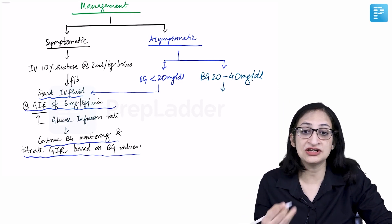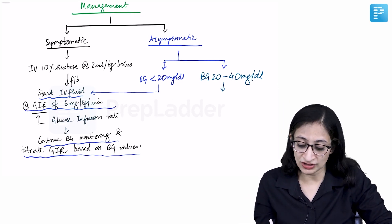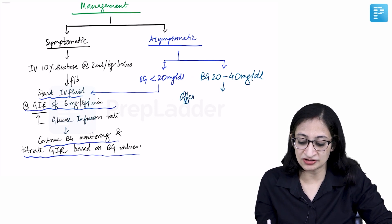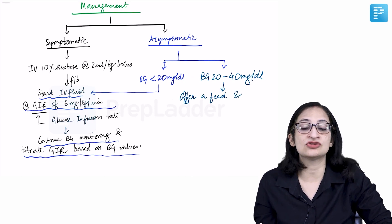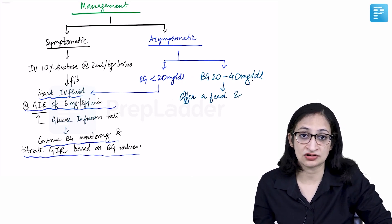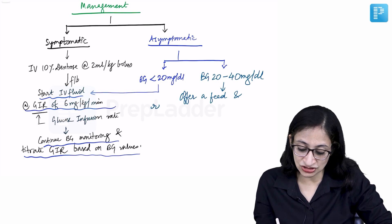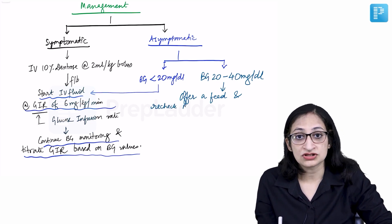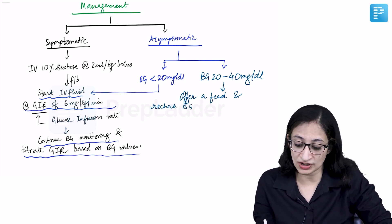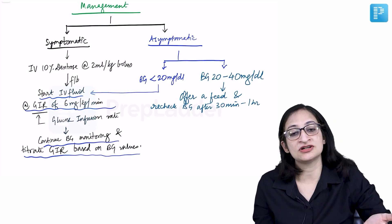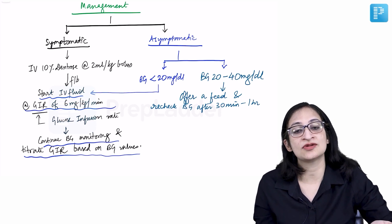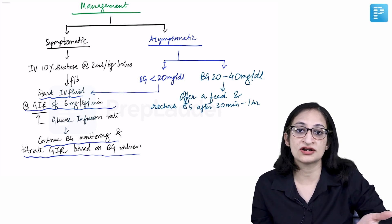If blood glucose is between 20 to 40 mg/dL and the baby is asymptomatic, offer a feed — expressed breast milk or direct breastfeeding — and recheck blood glucose after 30 minutes to 1 hour.